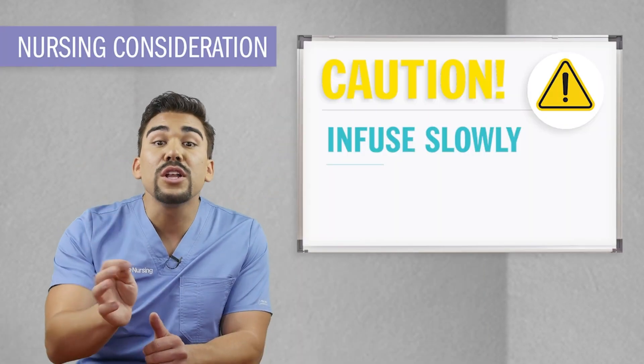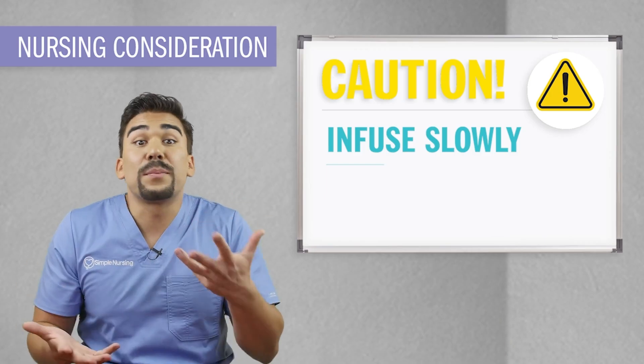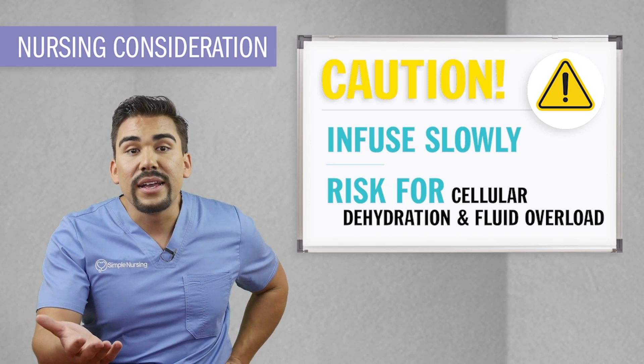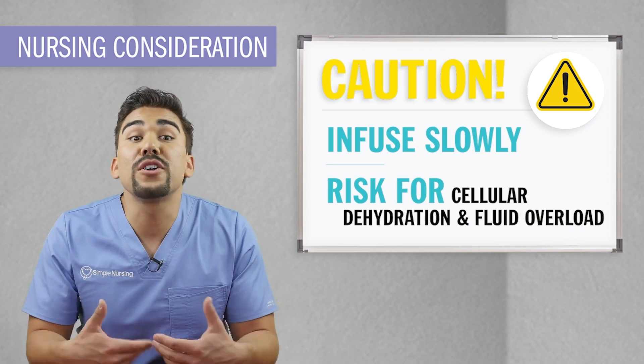Key nursing interventions when using hypertonic solutions: Infuse slowly, not as a big bolus. If administered rapidly or in large quantities, hypertonic solutions may cause a massive fluid shift and overwhelm extracellular fluids — all this fluid ends up outside the cells. This can domino into cellular dehydration and even a bigger problem like fluid volume overload.